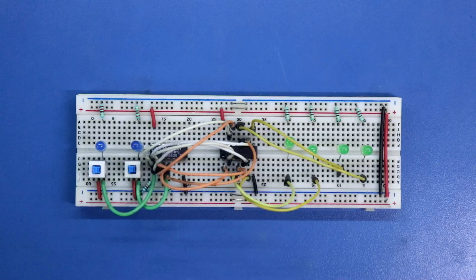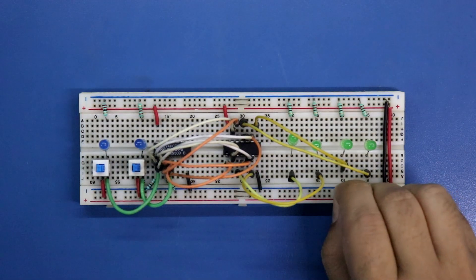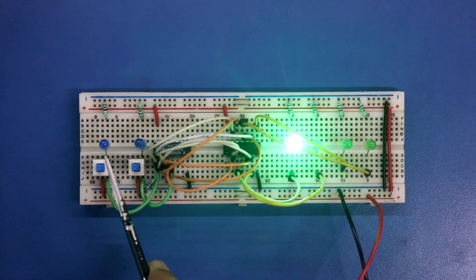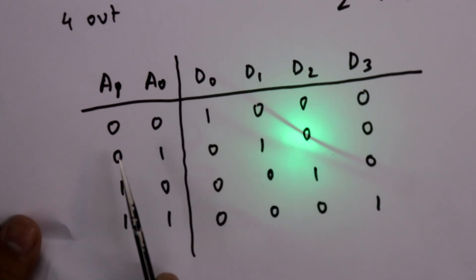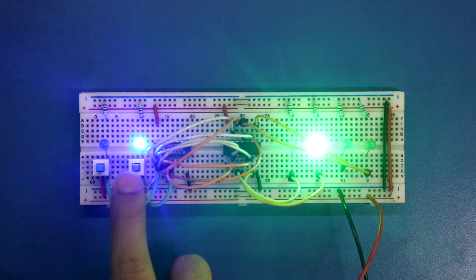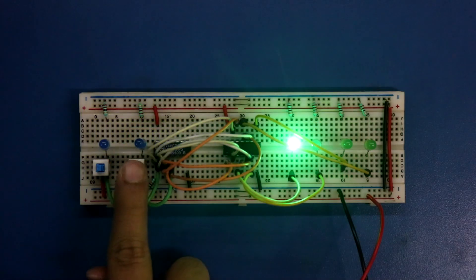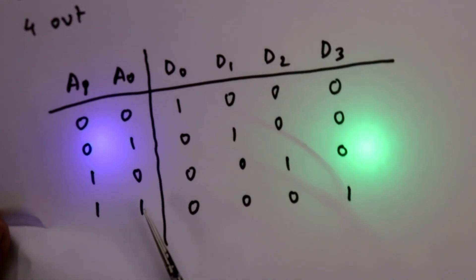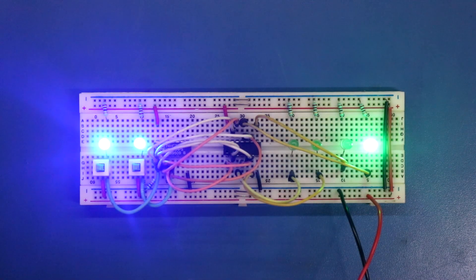This is how we have completed our connections. Connecting the 5V power supply — negative and positive. Now testing: input 00, we get D0 as 1. Next input 01, D1 is high. Then input 10, we get D2 high. And if input is 11, D3 is high. This is how you can design a 2-to-4 line decoder.